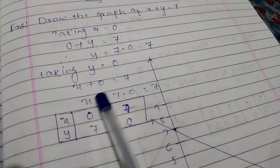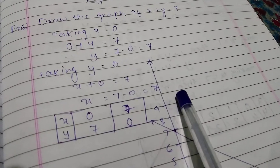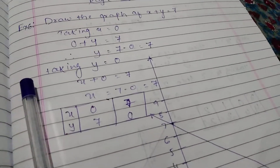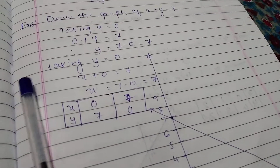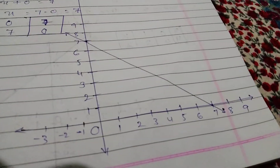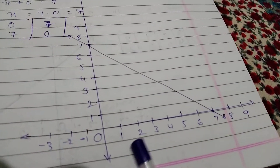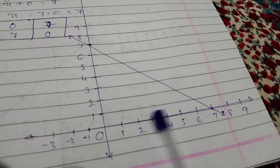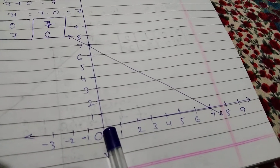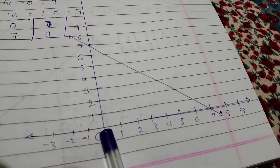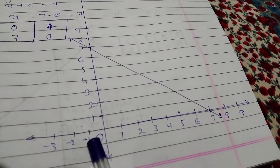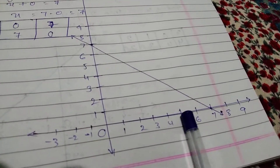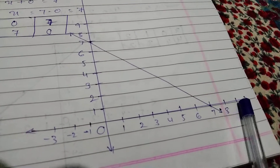We have obtained the coordinates from the table. Now we will plot these on the graph. Here is the graph line, and this is the origin (0). The graph shows the x-axis and y-axis with markings.